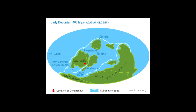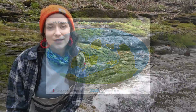This mountain range is known as the Acadian Mountains. Along the western edge of the coastal Acadian Mountains, the existing shallow inland sea begins to deepen. The section of sea alongside the rising mountain belt begins to fill in with the mud, sand, and gravel eroding from the rising Acadian Mountains.